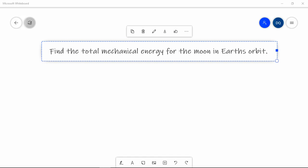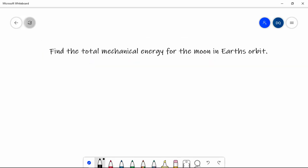I'm going to show you now how to find the total mechanical energy of the Moon as it orbits the Earth. So the total amount of energy is going to be equal to the gravitational potential energy plus the kinetic energy.